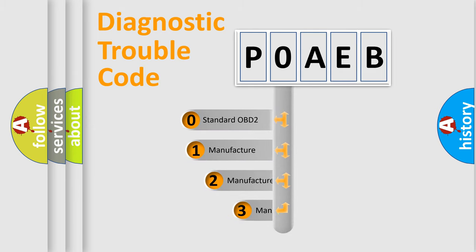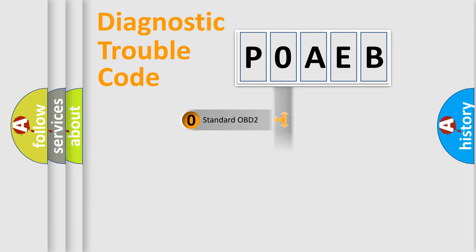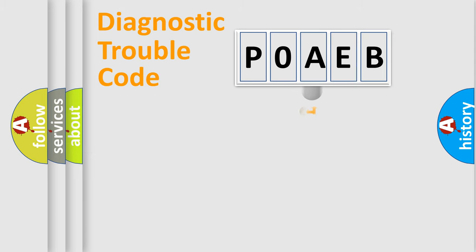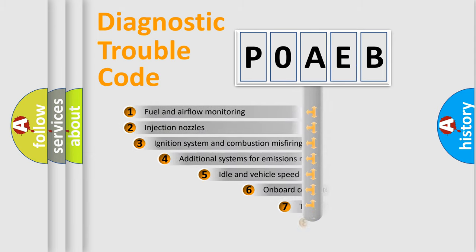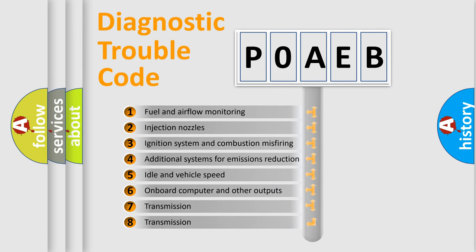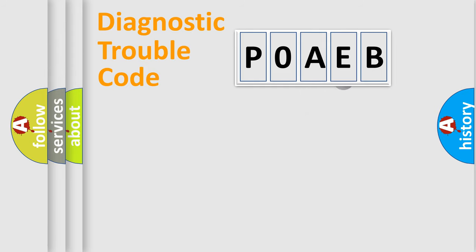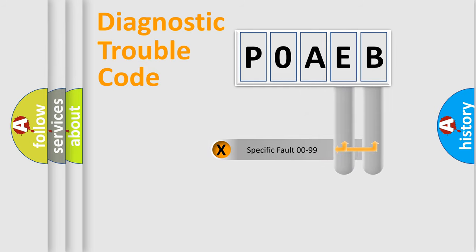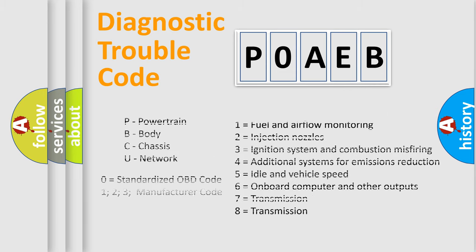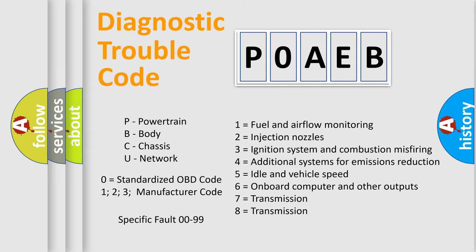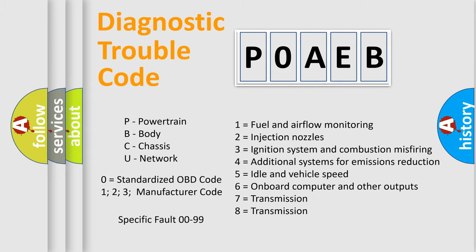If the second character is expressed as zero, it is a standardized error. In the case of numbers 1, 2, or 3, it is a more manufacturer-specific expression of the error. The third character specifies a subset of errors. This distribution is valid only for the standardized DTC code, where only the last two characters define the specific fault of the group. This division is valid only if the second character is expressed by the number zero.